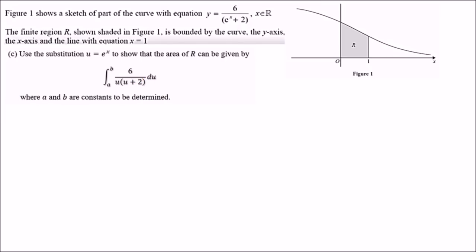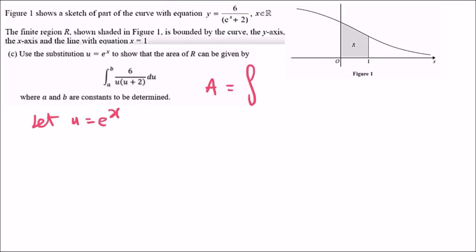Part C: use the substitution u equals e to the power x to show the area of region R can be written as a definite integral in u with constants a and b. The area of R is the integral from 0 to 1 of 6 over (e to the x plus 2) dx. Let u equal e to the x.